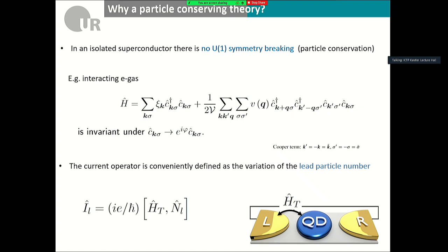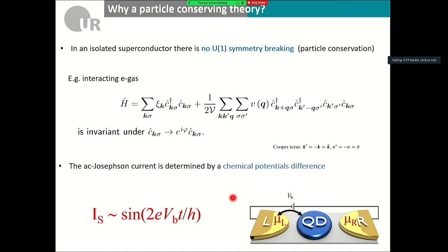A third argument is the AC Josephson effect. When you apply a DC bias — a difference of chemical potential μ_left and μ_right between your electrodes — the AC Josephson effect tells you that the supercurrent oscillation frequency is proportional to the applied DC bias. This is because you have a reservoir of Cooper pairs sitting at two different chemical potentials. This is a good motivation to look at superconductivity in another way.